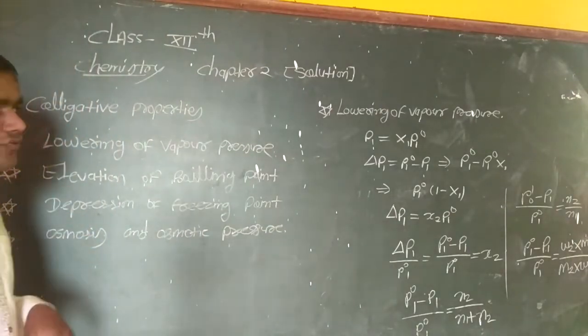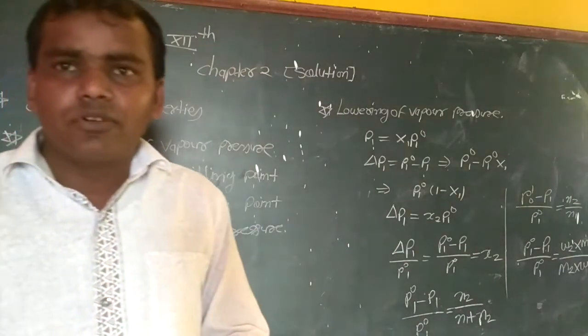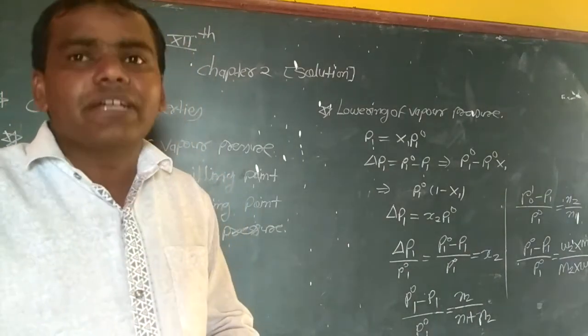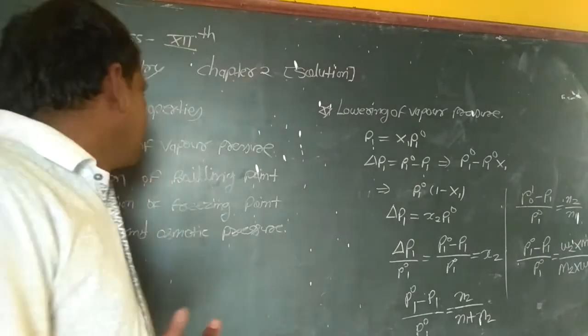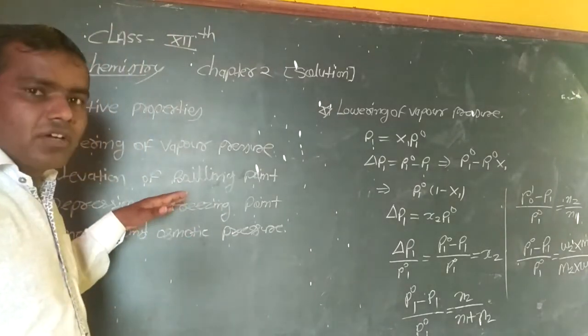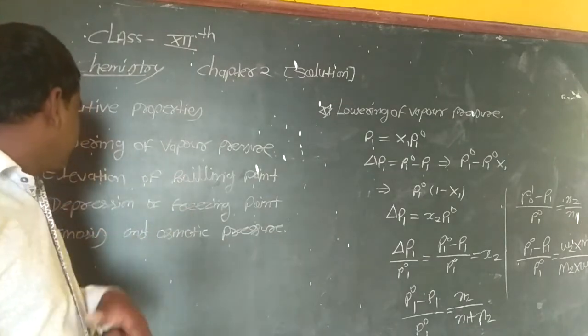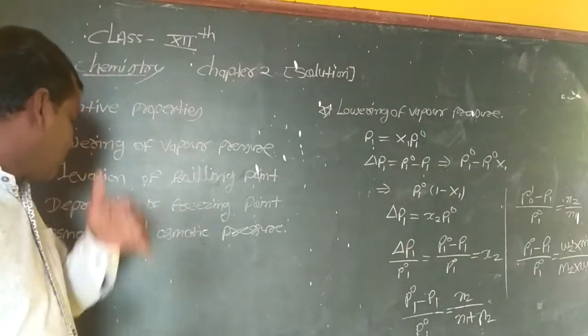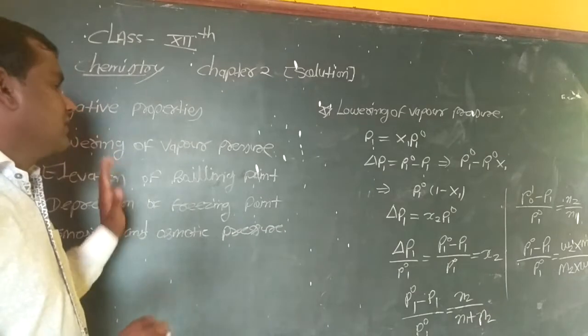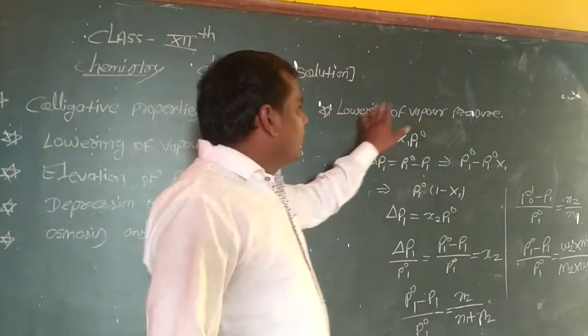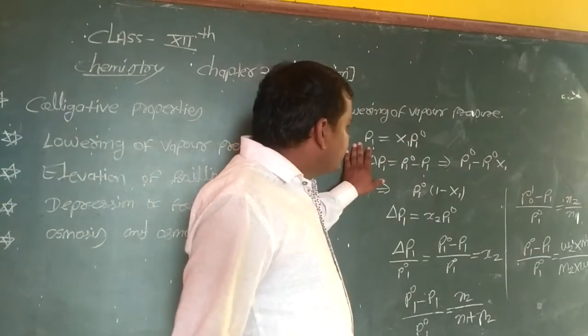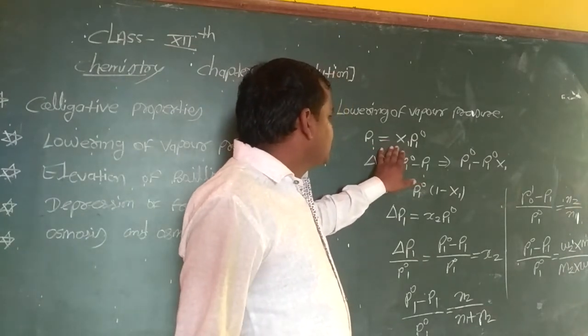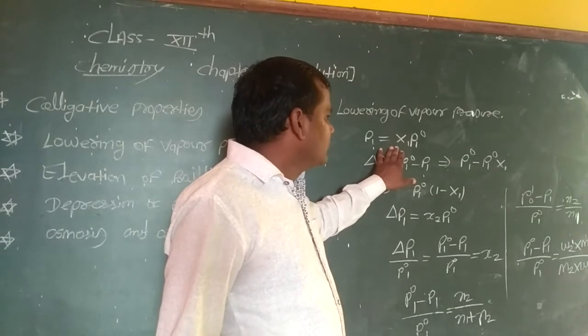For freezing point, when we add a solute, the freezing point decreases. This is called freezing point depression. For osmotic pressure, the osmotic pressure is the pressure needed to prevent the flow from lower concentration to higher concentration.